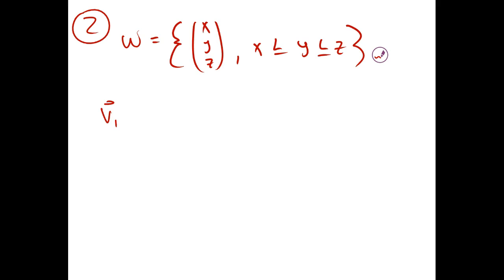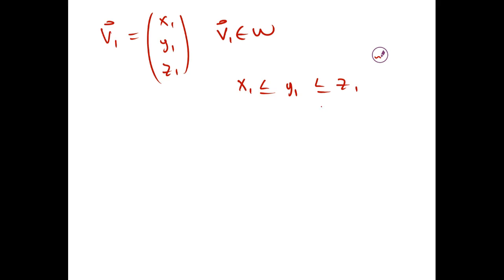If we define V1 to be (x1, y1, z1) and we define V1 to be in W, that means y1 is between x1 and z1. We can split this up into two separate statements: y1 is less than z1, and x1 is less than y1.